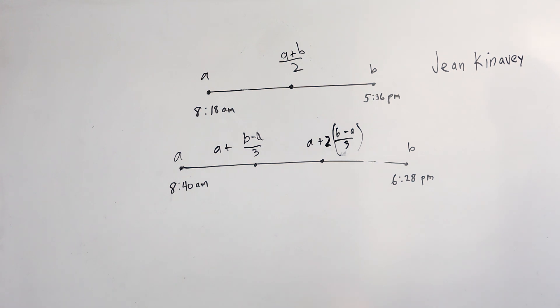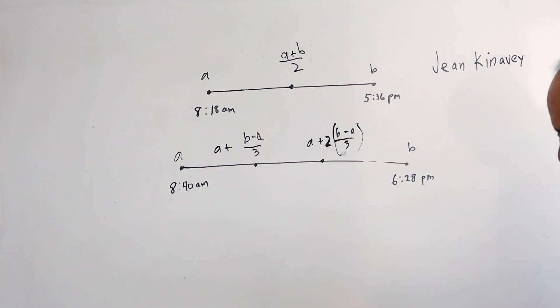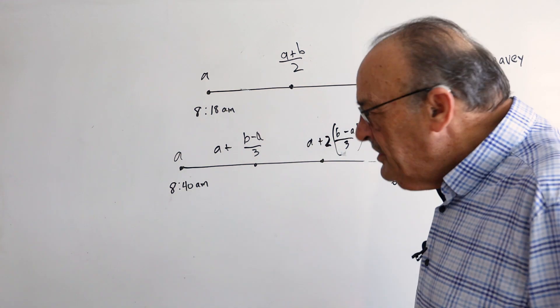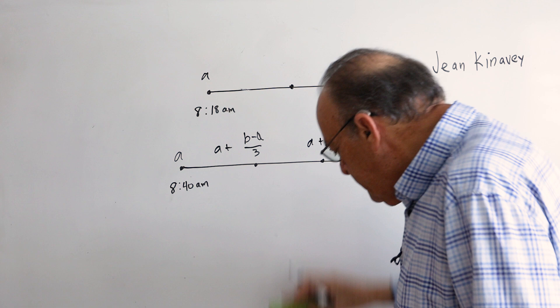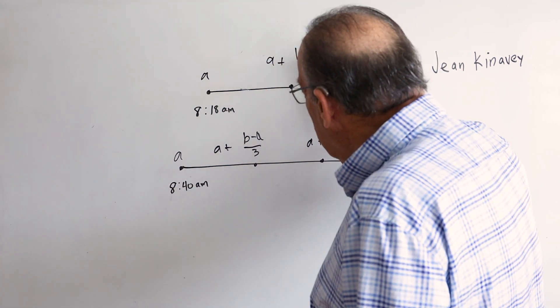Now Mrs. Kenevy didn't like it because she thought, if you're going to do this, then this formula isn't good. She thought it was confusing to the students. Instead, I should change this to a plus b minus a over 2.